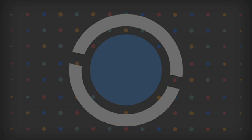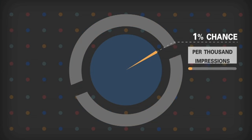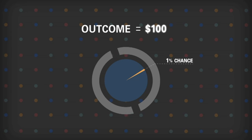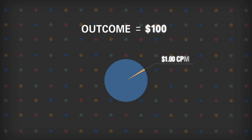For example, if an impression has a 1% chance per thousand impressions of achieving an outcome that is worth $100 to the advertiser, the suggested bid would be $1 CPM.